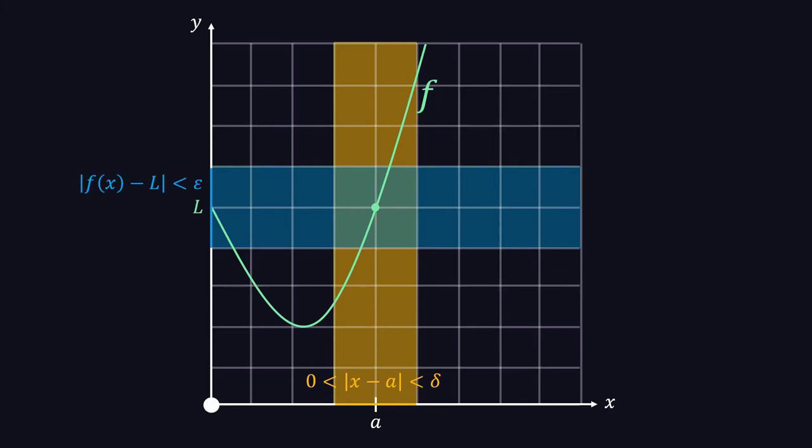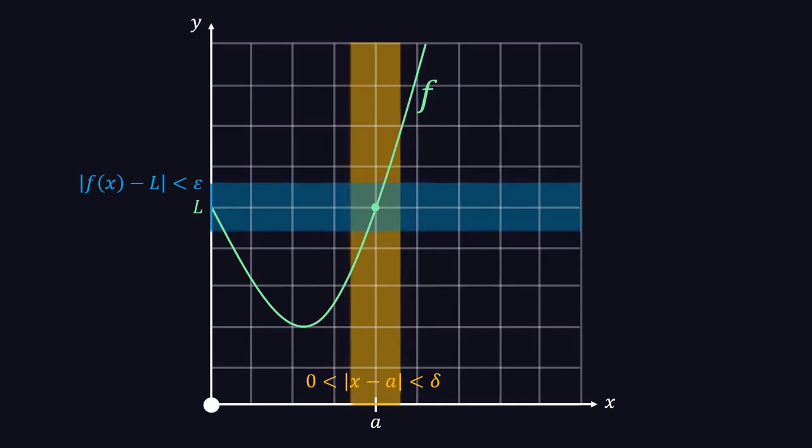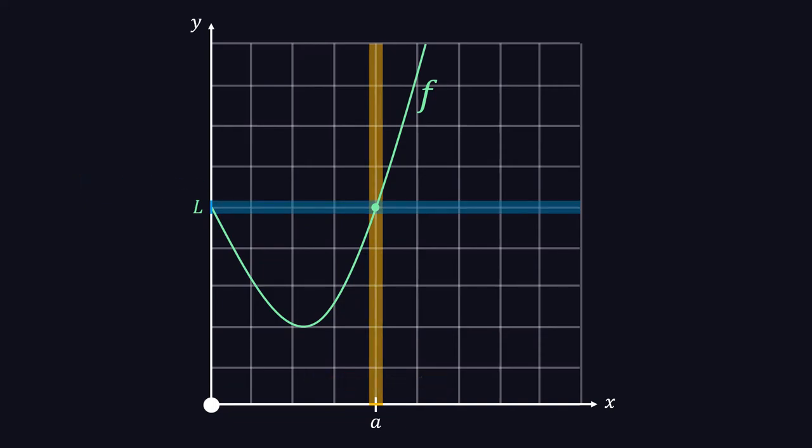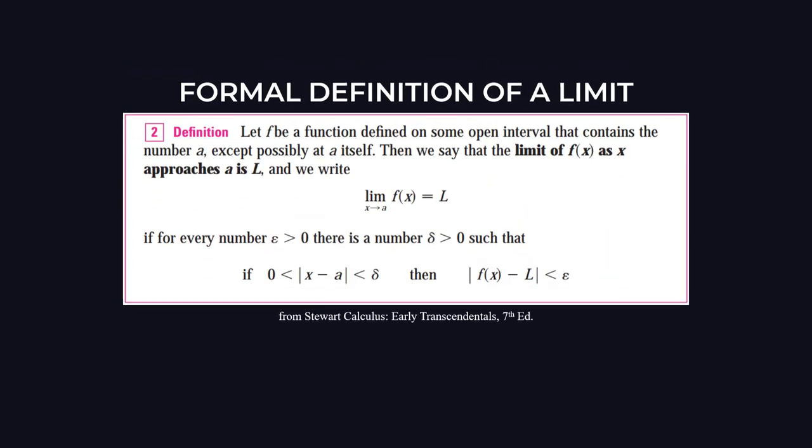And so, making x approach a is equivalent to making delta smaller and smaller such that the yellow region gets smaller. When this happens, the blue region also gets smaller since its size depends on the allowed values in the yellow region. By continuing to decrease the size of the yellow region, we see that f approaches a single number L. This is now the formal definition of the limit.